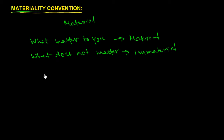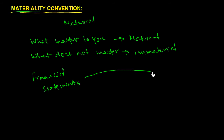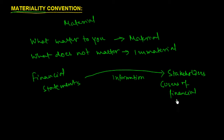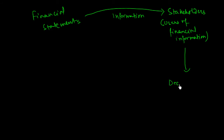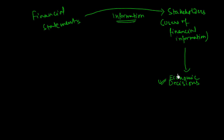We all know that the basic objective of accounting is to provide financial information about a business to its stakeholders. The financial statements provide information to the stakeholders, who are the users of such information, and they use it to make economic decisions with regard to the business.